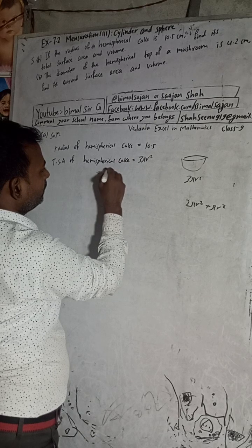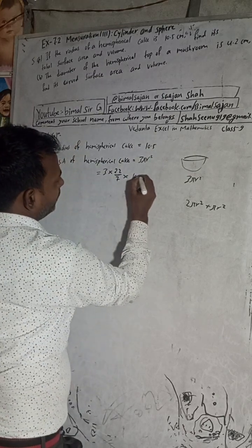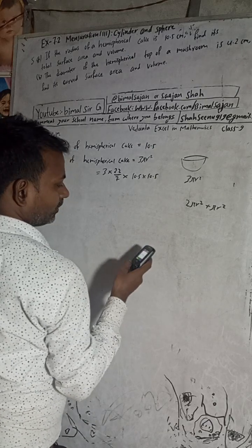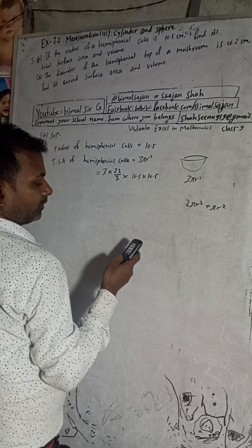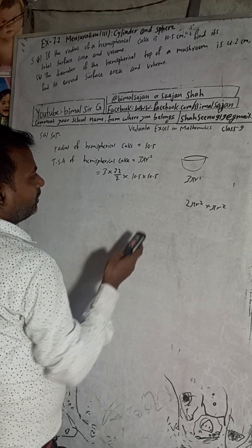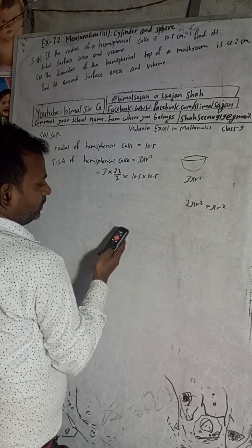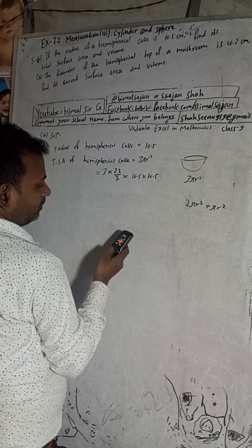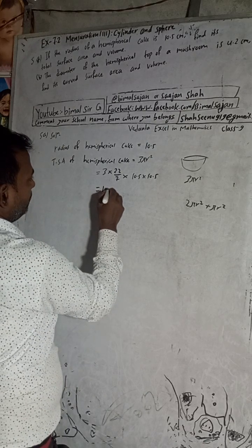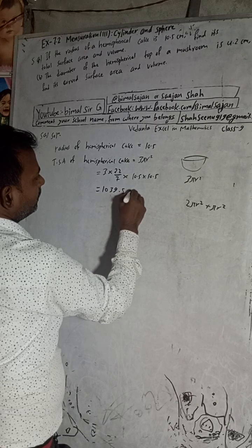Now applying the formula: 3 × (22/7) × r², where r = 10.5 cm. So 10.5 × 10.5 × 3 × 22 divided by 7 gives us 66 divided by 7, working through the arithmetic we get 1039.5 cm².